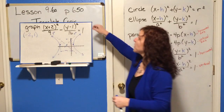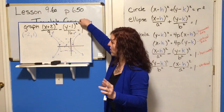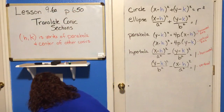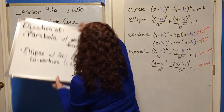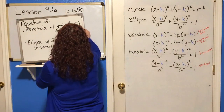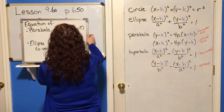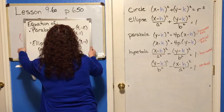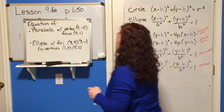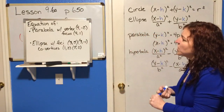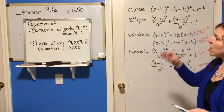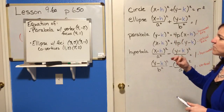Easy enough? So that's graphing. The other type of problem you'll have is where I give you parts and pieces and you need to write an equation for these different conics. I'm going to write an equation of a parabola with a vertex of 4, negative 2 and a focus of 4, 1.